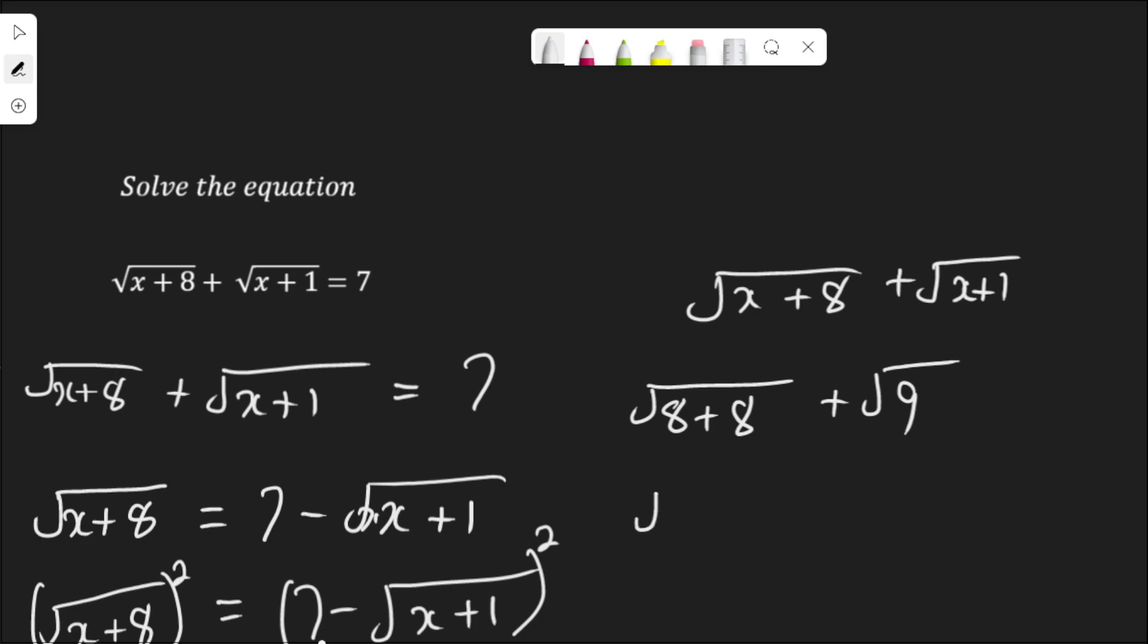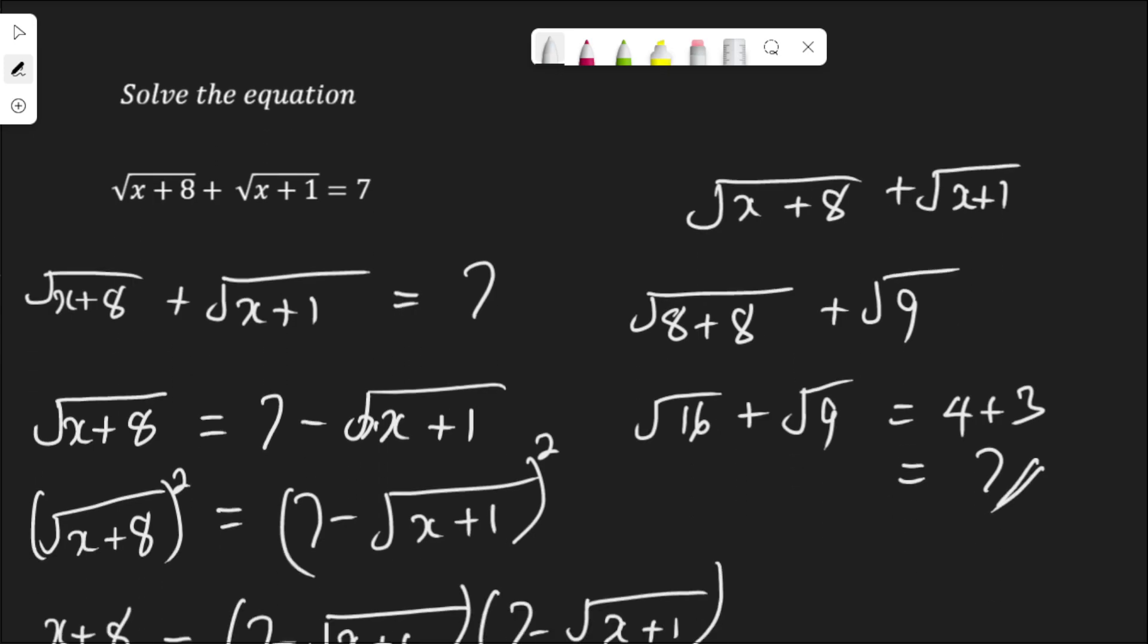8 plus 8 is 16. Square root of 16 is 4, square root of 9 is 3. 4 plus 3 is 7. Therefore, 8 satisfies the equation.